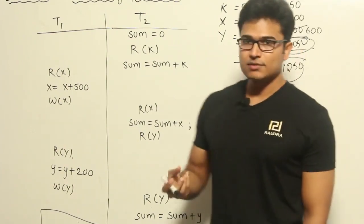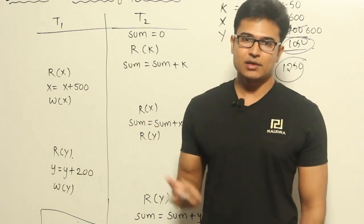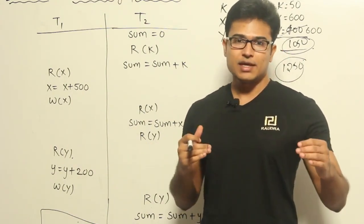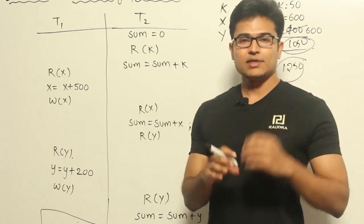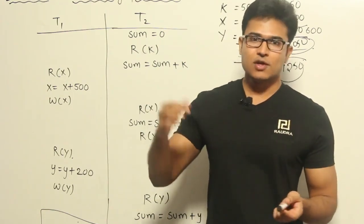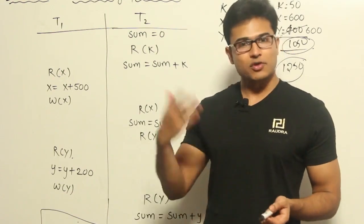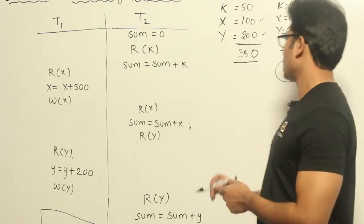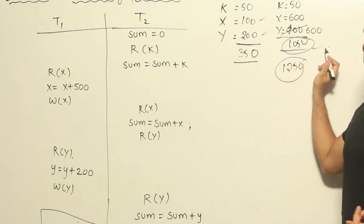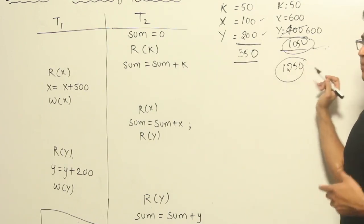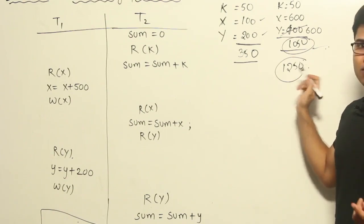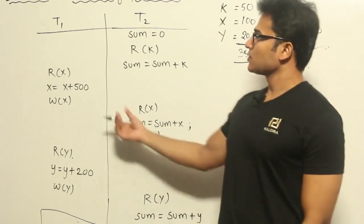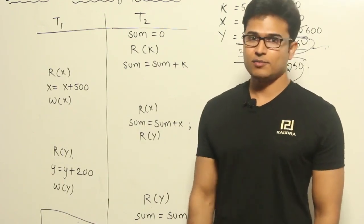Whenever you are trying to access various values from different databases or different tables, it is going to be many operations. And in between, if someone is going to change the values after you read the values or before you read the values, then the answer is going to fluctuate. So whatever summary you finally give may not be the correct one, right? Sometimes it might be more, sometimes it might be less depending on what is happening with the other values. So this is a problem which is called as incorrect summary problem.